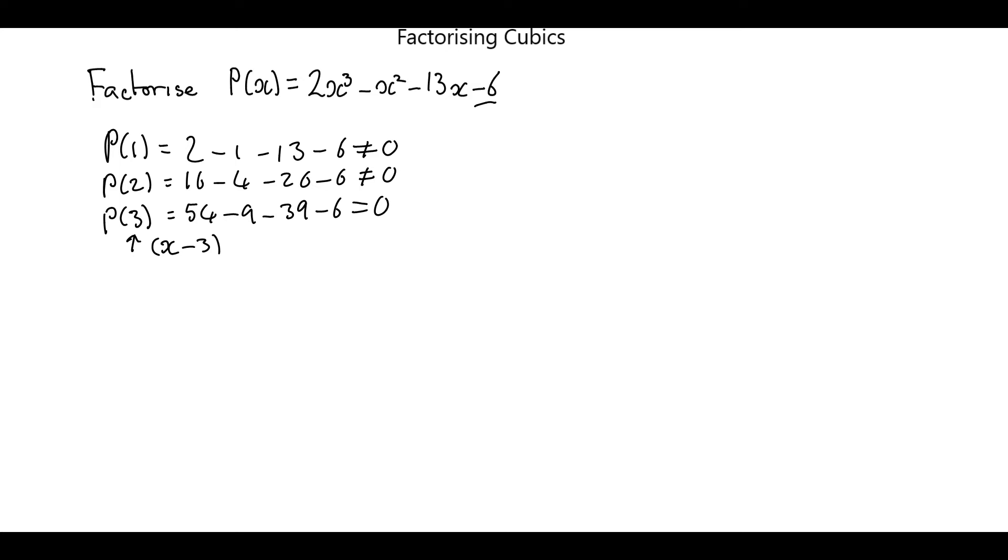So now what we're going to do is we're going to divide our original polynomial by X minus 3 using synthetic division. So what I want to do when I do this is I'm going to write down the coefficients and the constant. So I've got a 2, I've got a minus 1, I've got a minus 13, and I've got a minus 6. The minus 6 almost works as a check.